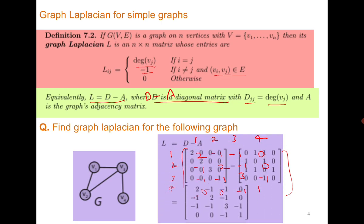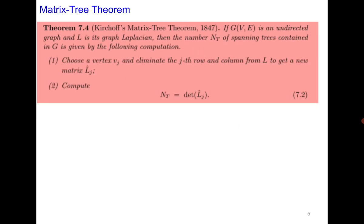Once we have the graph Laplacian, there is a very well-known theorem from 1847 — about 150 years ago — known as the Matrix Tree Theorem or Kirchhoff's Matrix Tree Theorem. It says: compute L, the graph Laplacian; then choose any vertex vj and delete the j-th row and j-th column from L to get a new matrix; then compute the determinant of this matrix, which gives the number of spanning trees in the labeled graph G.